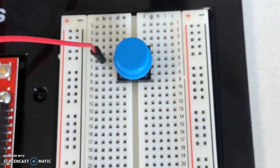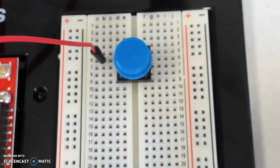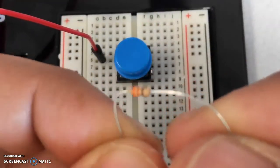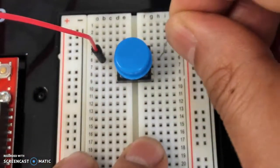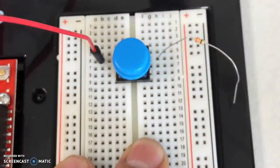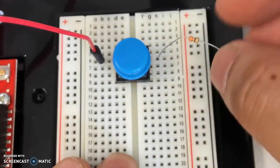What we're going to do next is connect this 330 ohm resistor to the top side of the switch. We're going to come down.